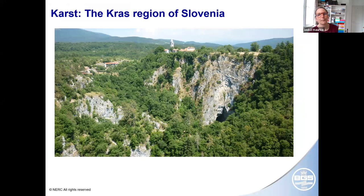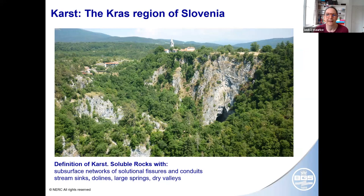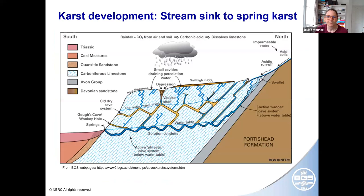The word karst comes from a place in Slovenia called Karst, where there's a typical karst landscape with little surface drainage and lots of big caves — you can see this entrance here seems to be bigger than the church. Karst occurs in soluble rocks where fractures in the subsurface are enlarged by dissolution to form networks of larger voids. This dissolution results in a characteristic set of landforms at the surface and in the subsurface. In karst areas, weakly acidic water enters the ground, and over time pathways between input and output points evolve and enlarge, forming networks of conduits between stream sinks and springs.